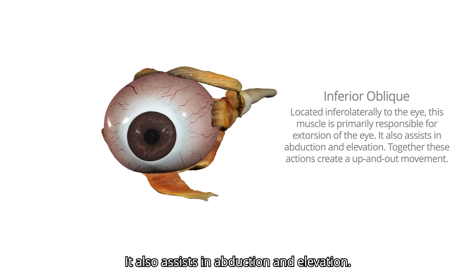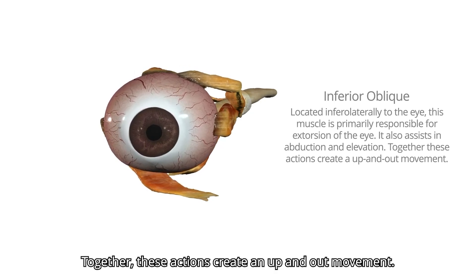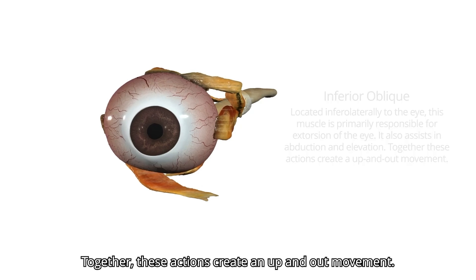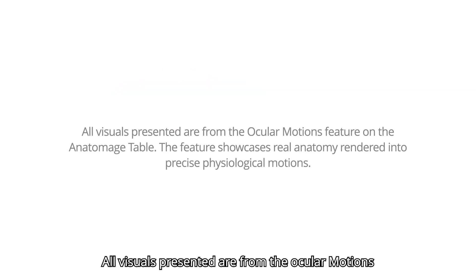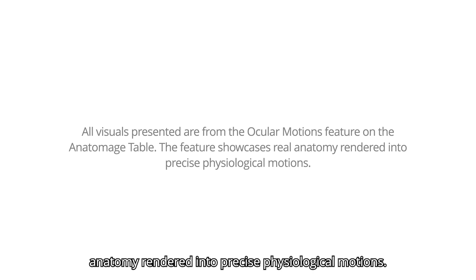The inferior oblique also assists in abduction and elevation. Together, these actions create an up-and-out movement. All visuals presented are from the ocular motions feature on the Anatomage Table — a feature that showcases real anatomy rendered into precise physiological motions.